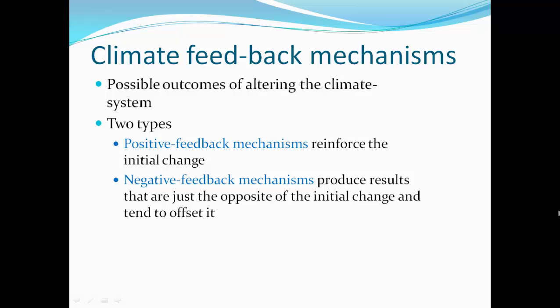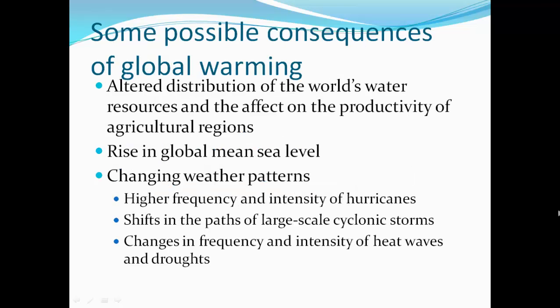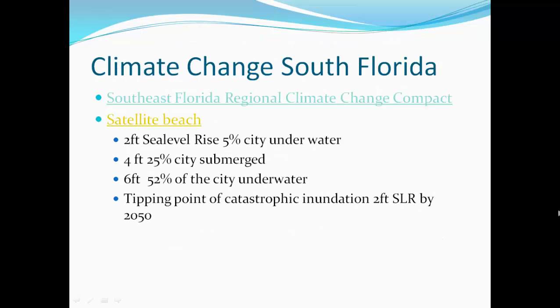Climate feedback mechanisms: positive feedback mechanisms reinforce the initial change, making things happen more and faster; negative feedback mechanisms produce results opposite to the initial change, tending to offset it. Some consequences: altered distribution of the world's water resources and effects on agricultural productivity. Rainfall is more highly variable — some places will get more rain, others less than they're used to. Rising global mean sea level as polar ice melts. Ocean water warming also causes expansion, further impacting sea level. Changing weather patterns include higher frequency and intensity of hurricanes, shifts in paths of large-scale cyclonic storms, changes in frequency and intensity of heat waves and droughts, and more extreme weather overall.